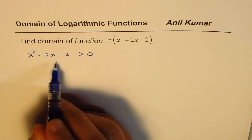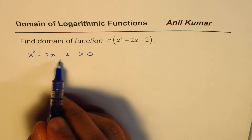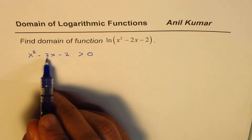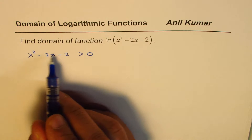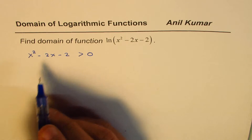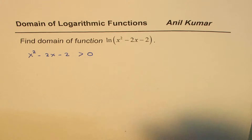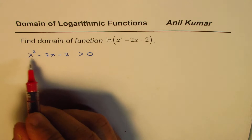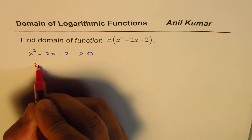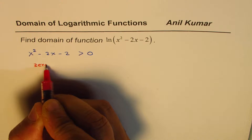Now let's try to factor this. We don't have any two numbers which could multiply to give this and whose sum could be -2. So we'll use the quadratic formula to solve for this and find the zeros of this function.